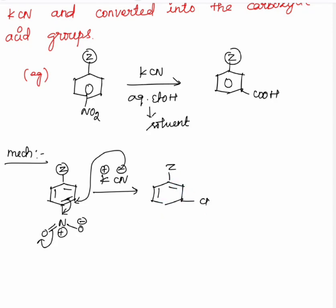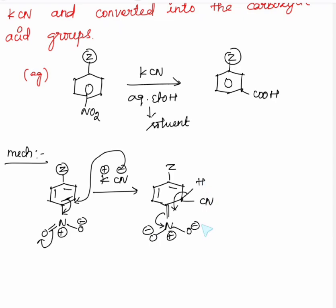Here we have CN with a double bond N, O minus, and also O minus here with a positive charge. This positive charge is stabilized by this bond shift here. This bond shift stabilizes the nitrogen. This nitrogen then takes this oxygen.